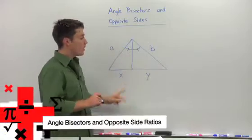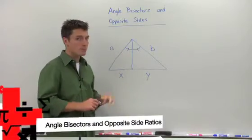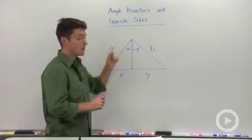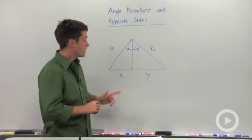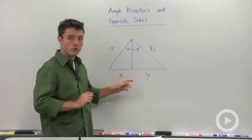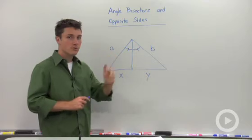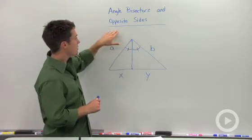In a triangle, if you draw in one of your angle bisectors—remember there's three, one for each vertex—you're going to divide the opposite side proportionally. We could write two different ratios here, and I'm going to explain what I mean by opposite side.